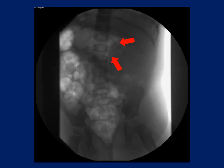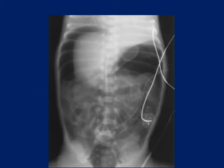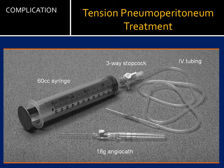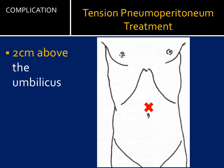If during the procedure we suddenly lose pressure while pushing and see some lucency, we shoot a real film and may see a large tension pneumoperitoneum. We want to have the 18-gauge angiocath ready to immediately decompress. Ideally also have nearby IV tubing with a three-way stopcock and a 60cc syringe to nicely remove the air once the angiocath is in position. The safest spot for needle placement is two centimeters above the umbilicus — you don't want to go on either side because of vessels.